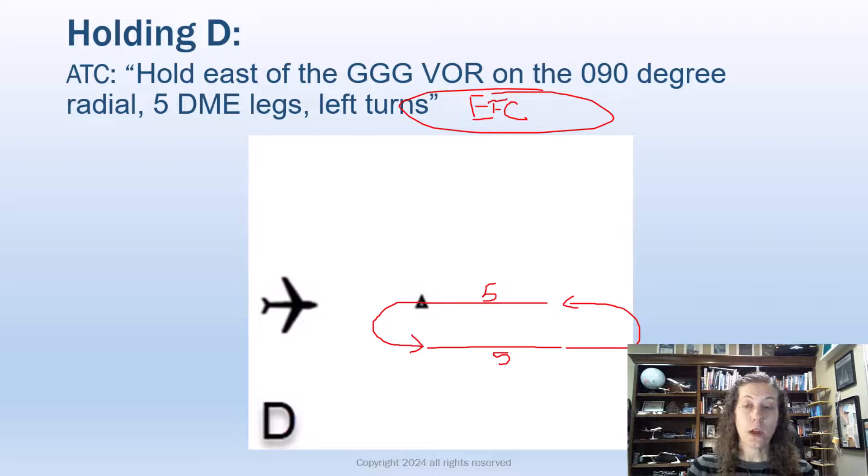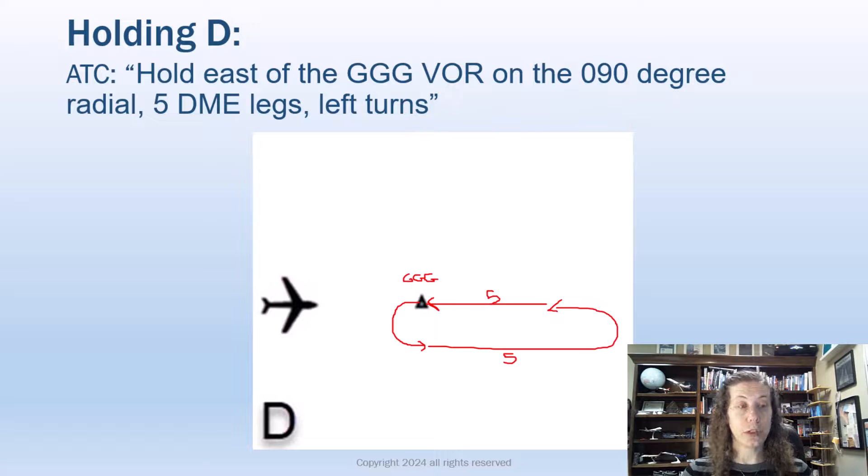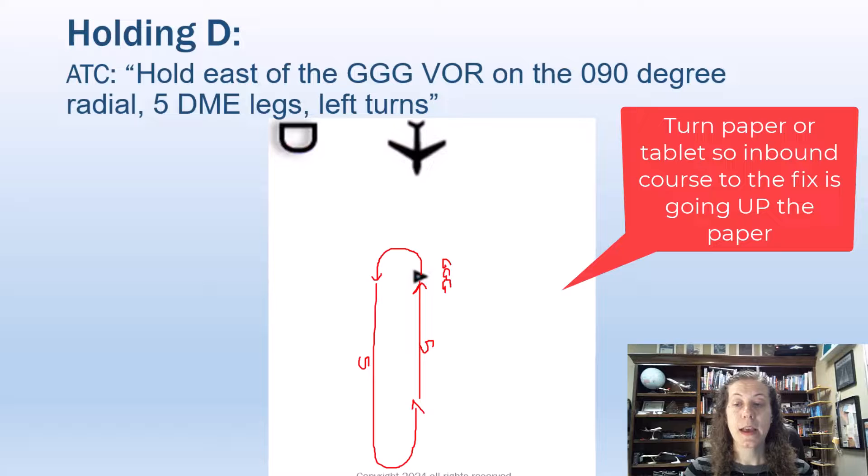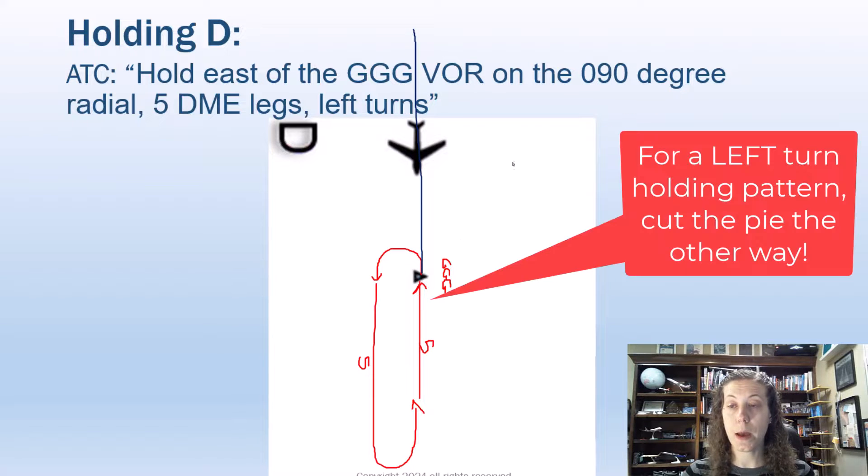So here is my holding pattern that I've drawn. We're going to once again turn that holding pattern so we're flying up toward the fix, and now I'm going to divide up my pie again. Notice it was left turns, so we got to be careful. So I'm going to draw my line straight up here. I'm going to cut my holding pattern accordingly. There we go.